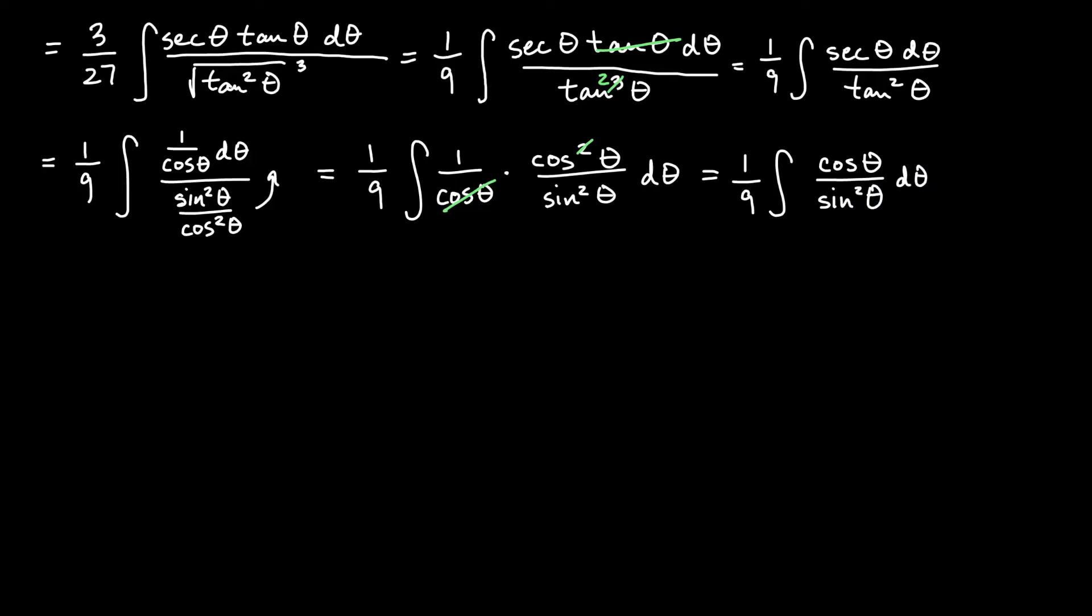And the way we will work this from here is to use a u substitution where u is sine of theta and du is exactly what we have. The rest of it cosine theta d theta. So this is going to be u squared down on the bottom there. So we will have 1 over 9 antiderivative of du over u squared. This is not a log rule, it's a power rule. We have 1 over 9.